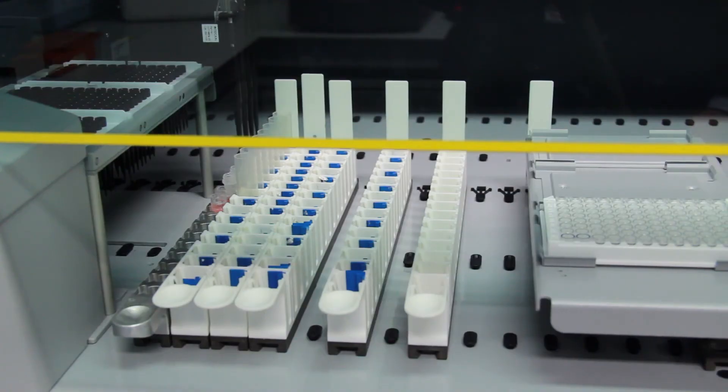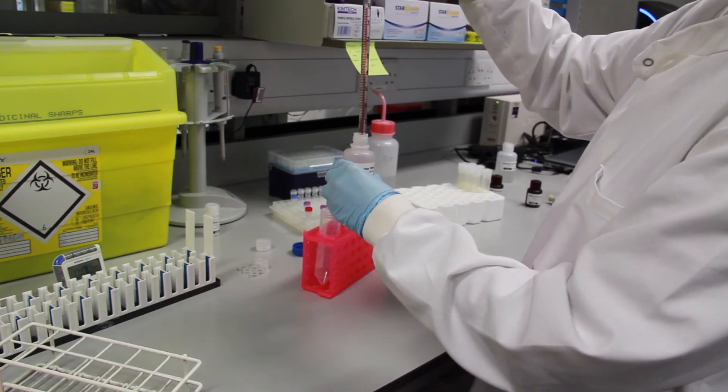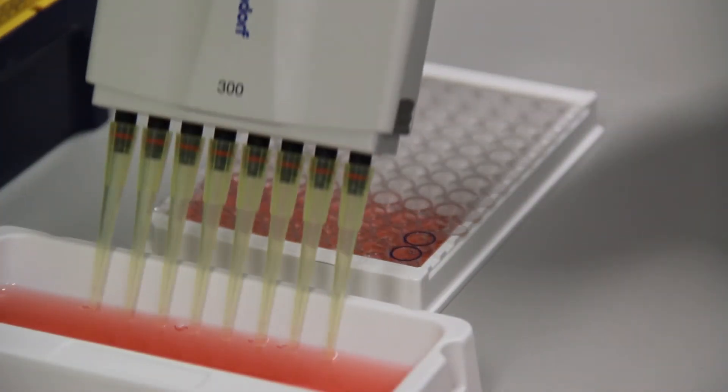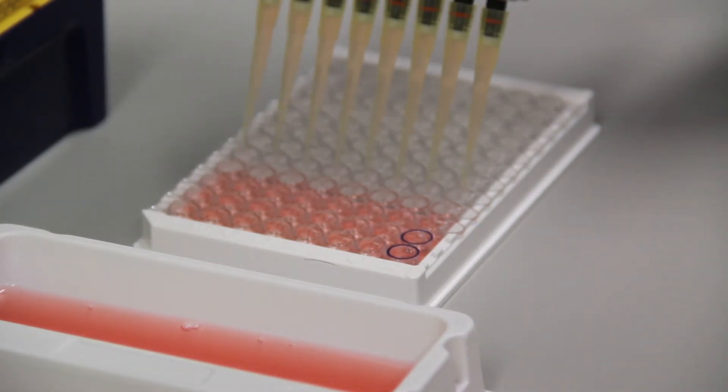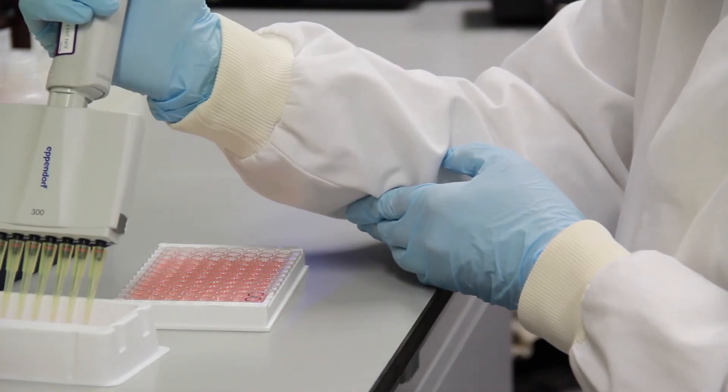We measure cortisol using a technique called ELISA, which stands for enzyme-linked immunosorbent assay. Antibodies and enzymes are added to produce colour changes in the cortisol samples, so that the colour intensity of the sample numerically correlates with the concentration of cortisol.